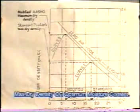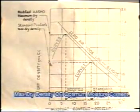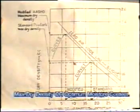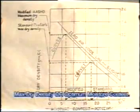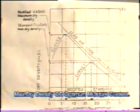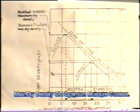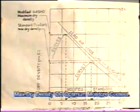Draw the graph between dry density and moisture content. Determine the peak dry density, that is maximum dry density (MDD), and the corresponding moisture content, that is the optimum moisture content (OMC), from the graph and report the same as MDD and OMC values of the given soil sample for future reference during execution and quality monitoring.